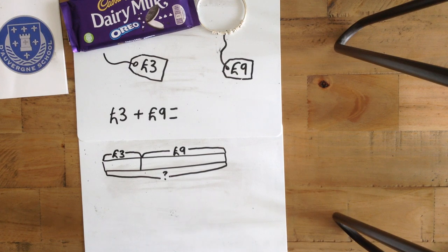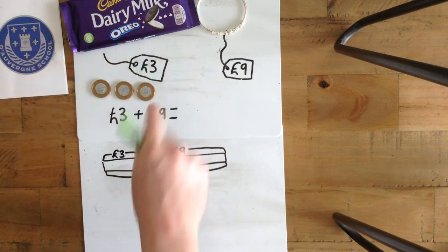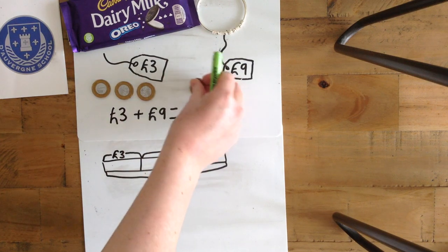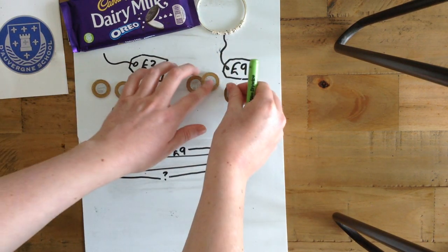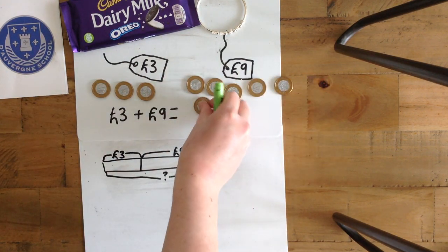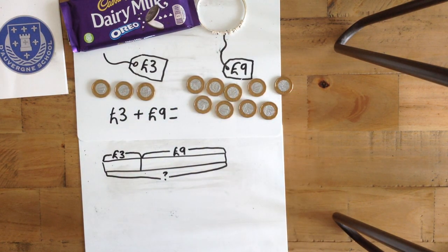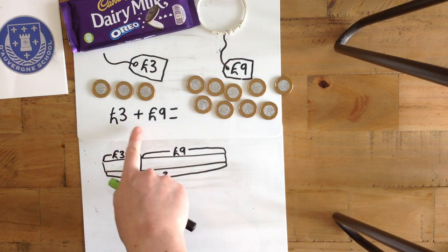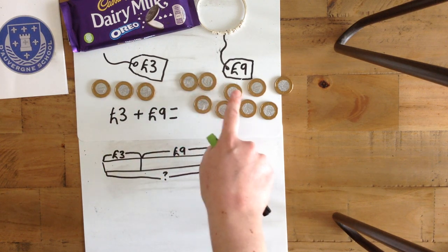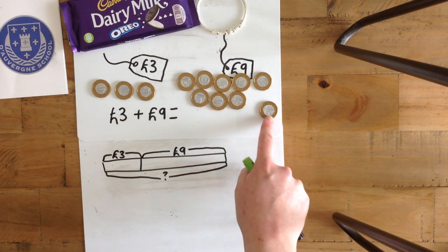Let's use money to help us. 1, 2, 3, add £9. 1, 2, 3, 4, 5, 6, 7, 8, 9, 10, 11, 12.